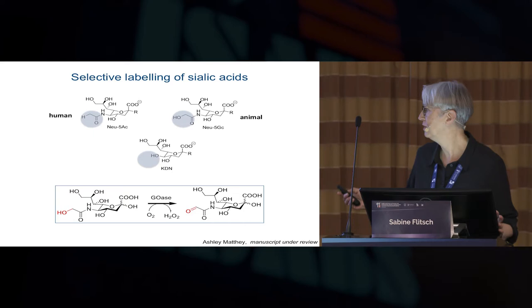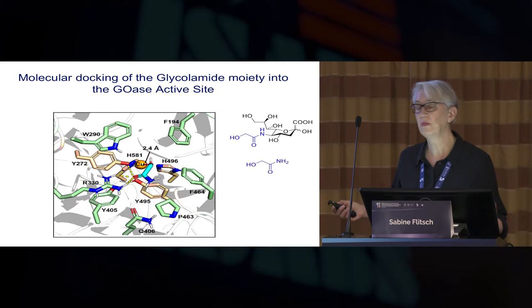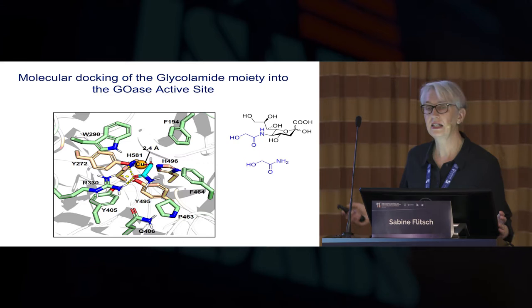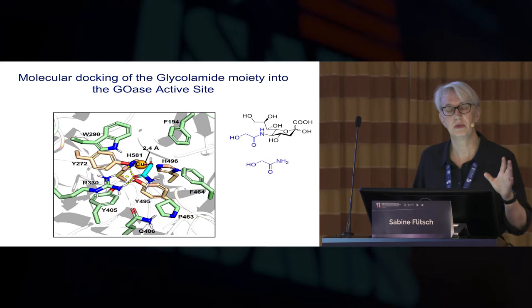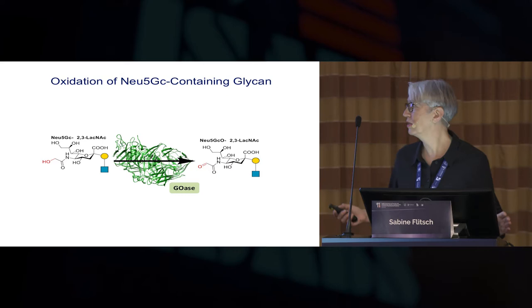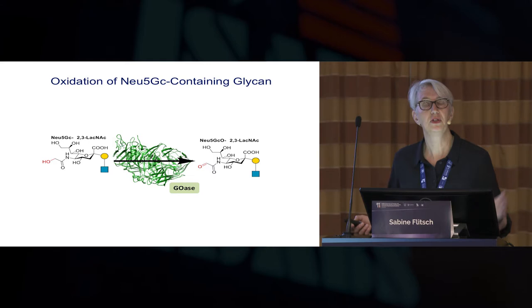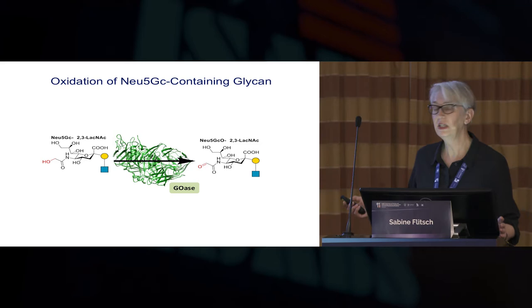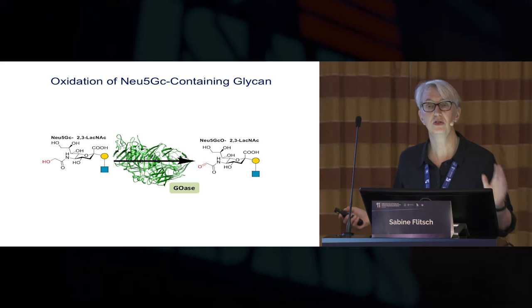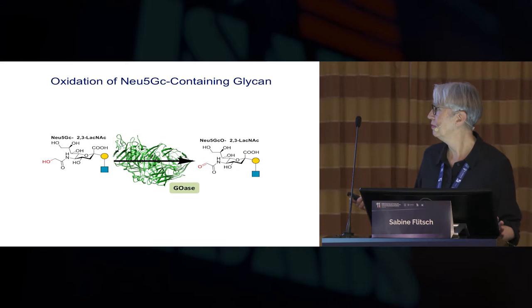Ashley Matty in my group did this work, and his manuscript is just under review. From modeling, we had evidence that the N-glycolyl group fits particularly well at the active site. Ashley took sialyllactose and the N-glycolyl equivalent, treated it with galactose oxidase, and found one mutant — the F2 mutant — that did this reaction with very high efficiency on the trisaccharide level and also on the monosaccharide level. He fully characterized this compound by NMR, unambiguously showing it hits the right hydroxyl group.